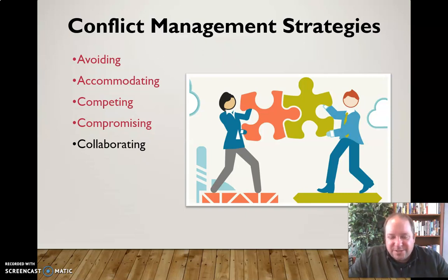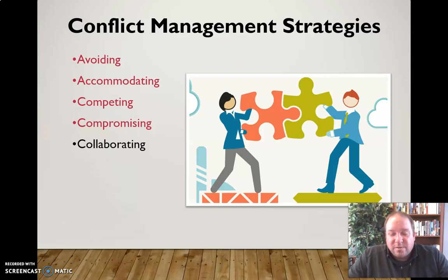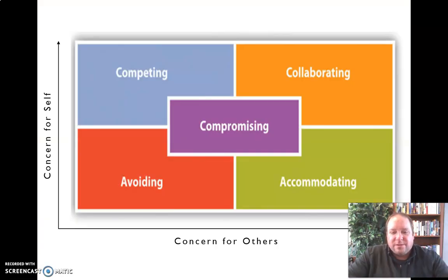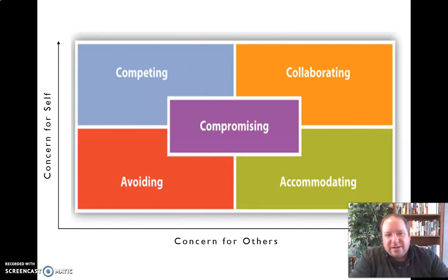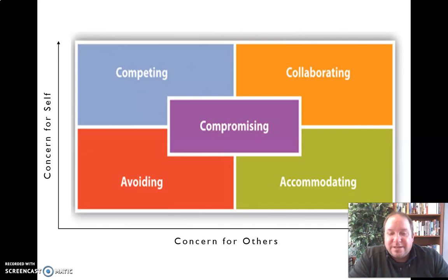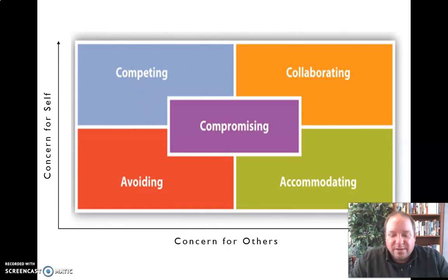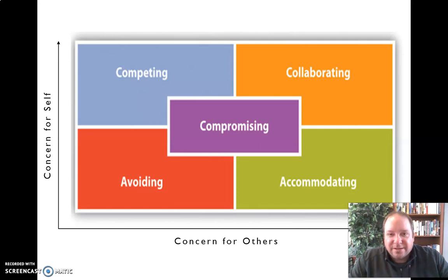Which conflict management strategy is going to be the best? Well, they all have their uses and can be useful in different scenarios. Looking at this chart, they exist on a spectrum of degree of concern for self versus concern for others. Collaborating ranks highly on both — it shows a good degree of concern for yourself but also for others — as opposed to competing, which has a high degree of concern for yourself but a low degree of concern for others. So we need to identify where we're at on this scale and what's most important for the group, both in terms of achieving goals and relational dynamics.